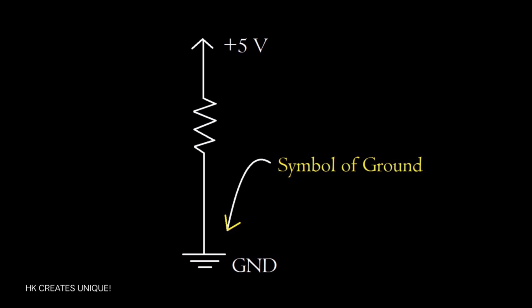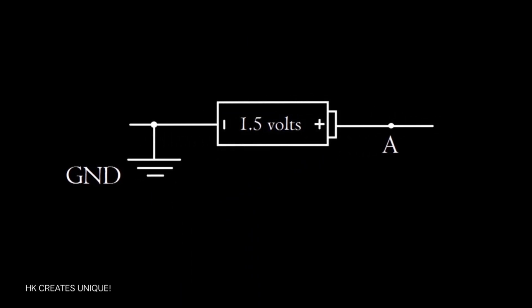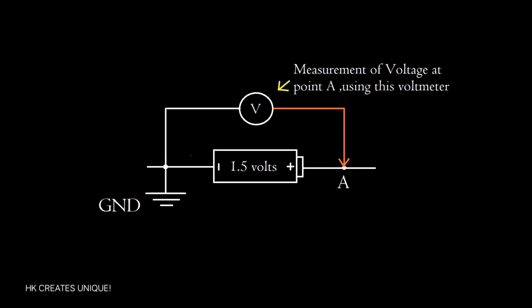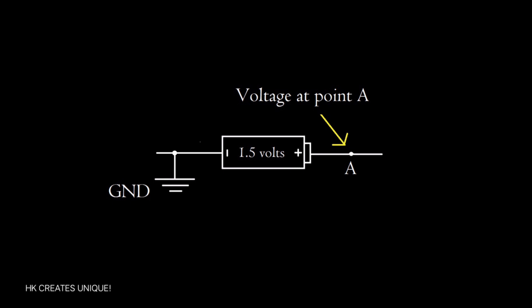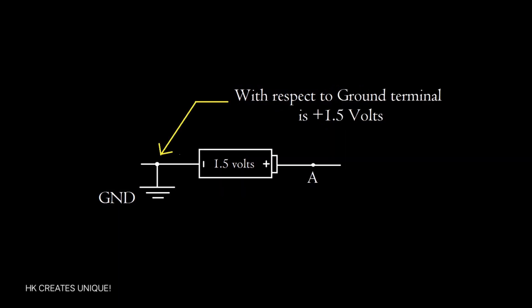In electronic circuits, ground is the reference point from which voltages are measured. For example, in this 1.5 volt cell, suppose ground terminal is this. Therefore, at point A, voltage is plus 1.5 volts. What we mean to say is that voltage at point A with respect to ground terminal is plus 1.5 volts.